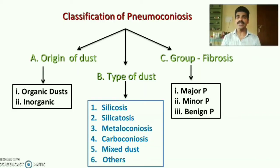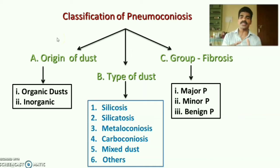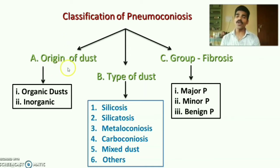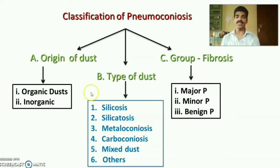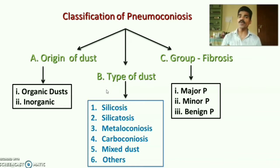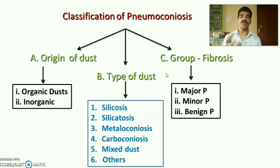There are mainly three classifications. One is related to dust and the second is related to formation of fibrosis. Related to dust, we have two classifications: first, according to origin of the dust, and second, according to the type of the dust. The third classification is according to the presence of fibrosis.